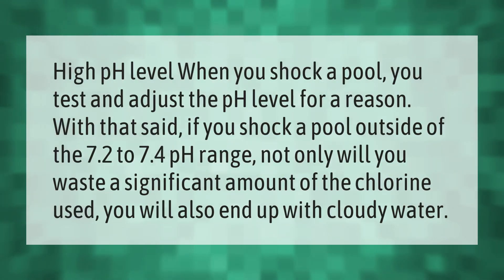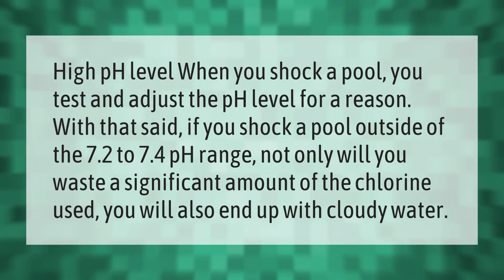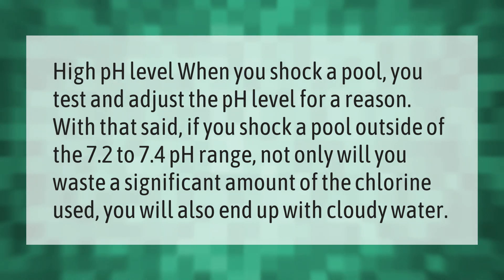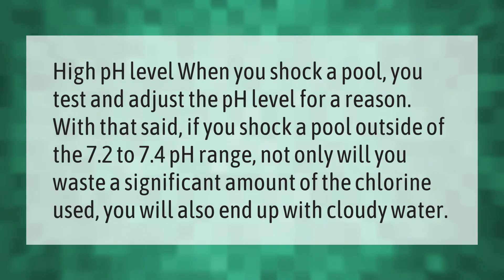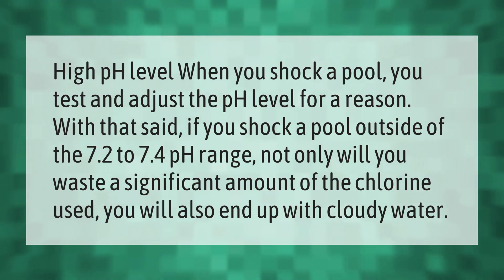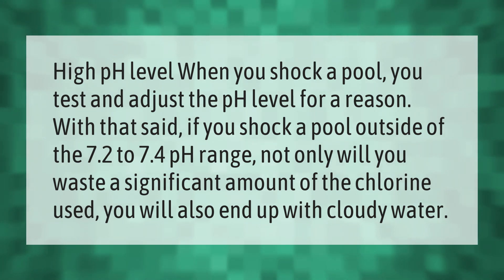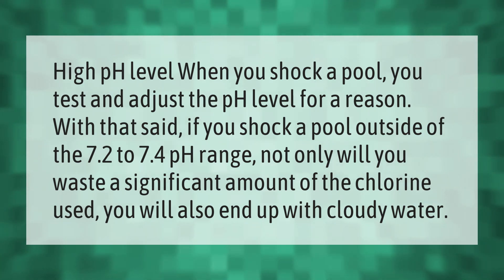When you shock a pool, you test and adjust the pH level for a reason. If you shock a pool outside of the 7.2 to 7.4 pH range, not only will you waste a significant amount of the chlorine used, you will also end up with cloudy water.